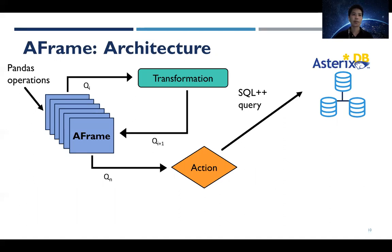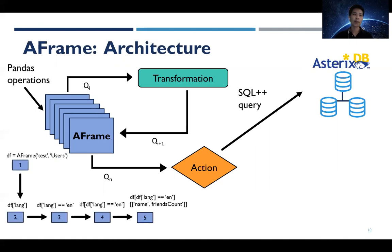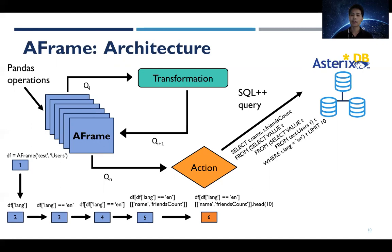In A-Frame, there are two types of operations, transformation and action. Transformations are operations that do not trigger query execution. Another type of operation is called action. Actions are operations that will result in A-Frame sending an underlying SQL++ query directly to Asterix DB for execution, which then returns results.